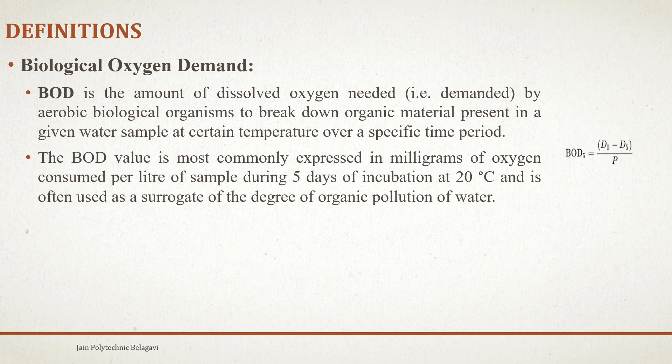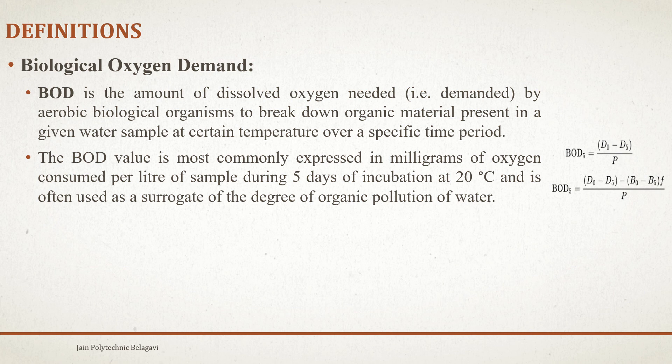There are formulas to calculate BOD. The first formula is: BOD₅ = (D₀ − D₅) / P. The second formula is: BOD₅ = [(D₀ − D₅) − (B₀ − B₅) × F] / P.